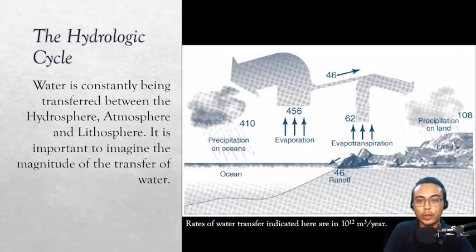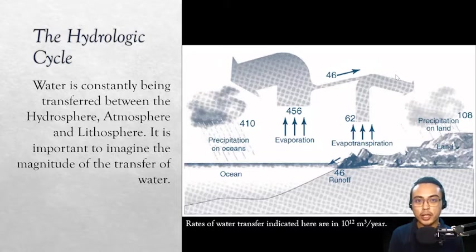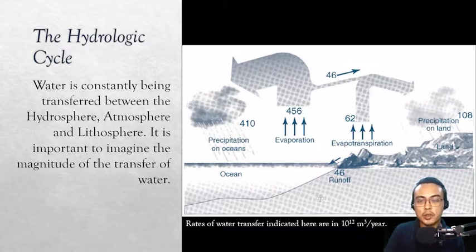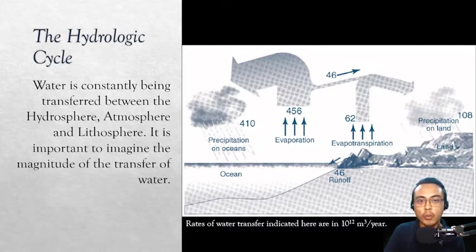The hydrologic cycle, most commonly known as the water cycle, involves water constantly being transferred between the hydrosphere, atmosphere, and lithosphere. It is important to imagine the magnitude of this transfer because not all transferred water is useful to us. For example, the majority of our water is in the form of salt water. Comparing rates of water transfer — indicated in 10 raised to 12 cubic meters per year or 10 gigatons per year — majority of evaporation comes from the ocean and goes back to it. The small portion that goes into precipitation on land, combined with evapotranspiration, is basically what we use as fresh water.